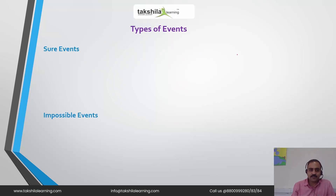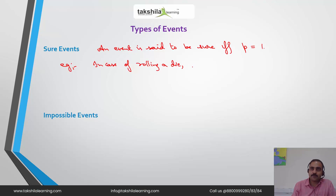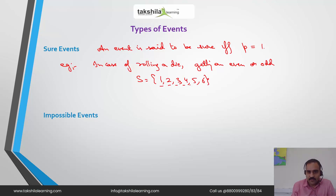The next topic is types of events. The first one is a sure event. An event is said to be sure if and only if its probability is equal to 1. For example, in the case of rolling a die, if our requirement is getting a number that is either even or odd, then every number in the sample space {1, 2, 3, 4, 5, 6} qualifies. The probability is 6 favorable cases over 6 possible cases, which equals 1. So this is a sure event.